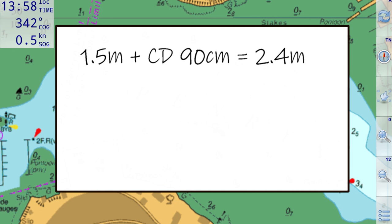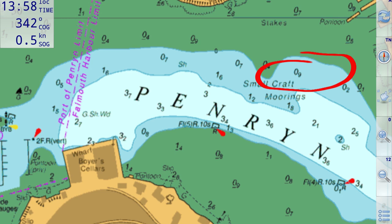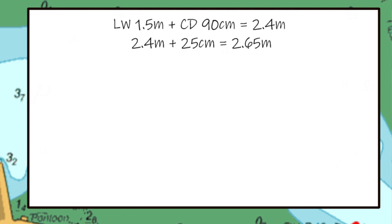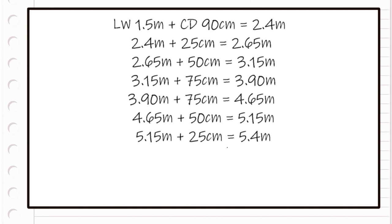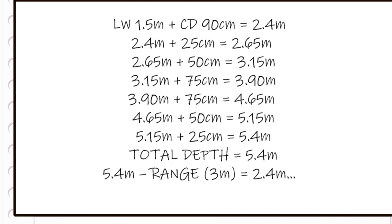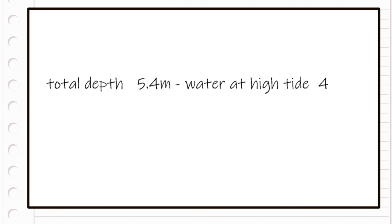At low water, the depth will be about 1.5 meters plus chart datum which is printed on the chart. An hour after low water we need to add one twelfth of the range. In the second hour you add another two twelfths, and in the third and fourth hours after low tide you add another three twelfths for each hour. In the fifth hour you add two twelfths more. In the sixth hour you add the last twelfth.